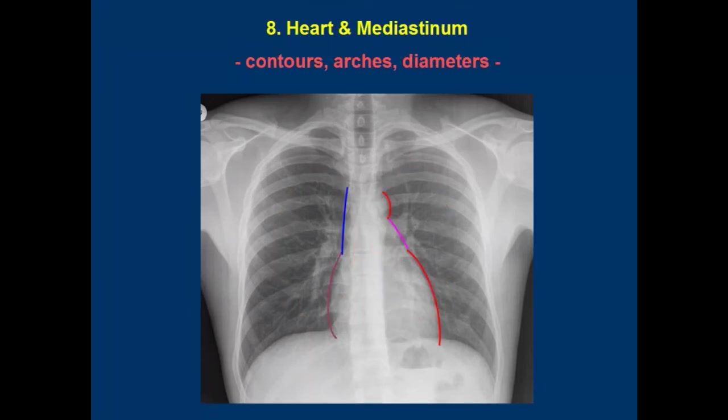8. Heart and mediastinum. Focus mainly on contours and arches. Heart diameter measurement is less relevant nowadays because echocardiogram is far more accurate, but there are still some situations when you should measure the heart on plain film, especially if the medical file does not mention any known heart diseases. You don't have to be very accurate — just make sure they're out of normal range so you can recommend a cardiology examination in your report.